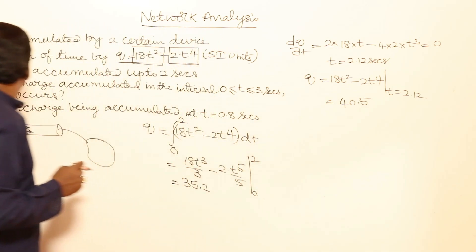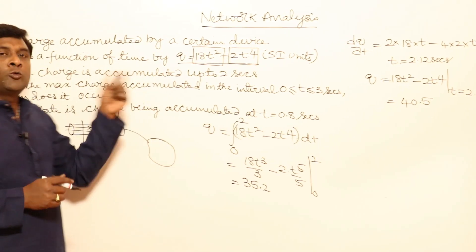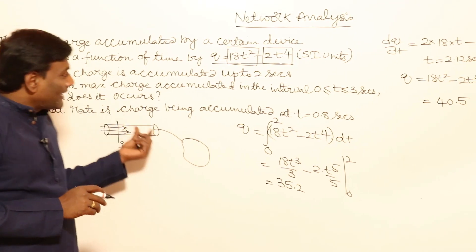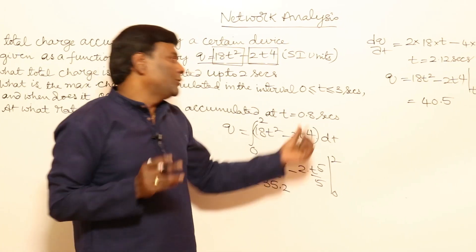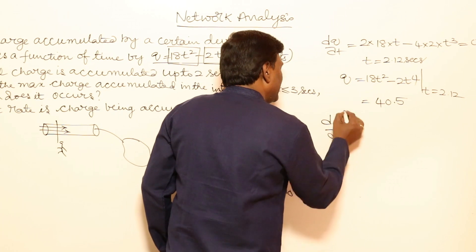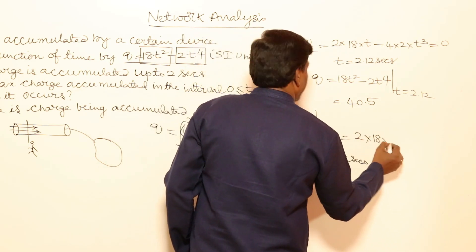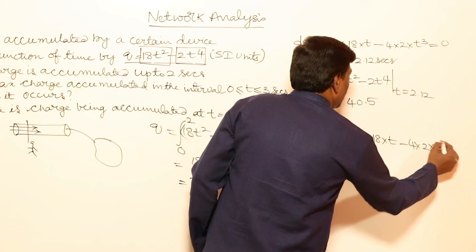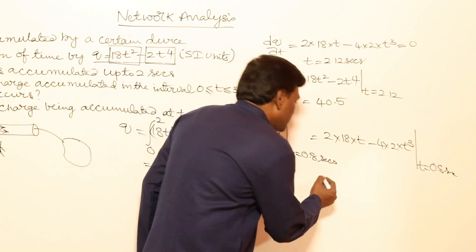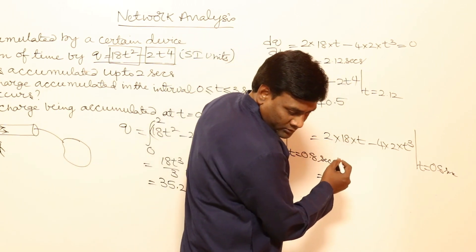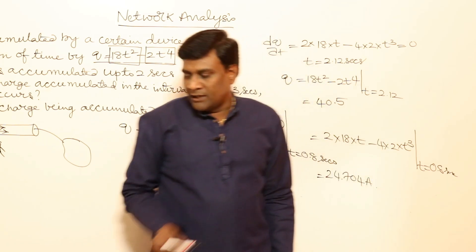What is the rate at which charge is being accumulated at t = 0.8 seconds? The rate of charge accumulation is current, so we compute dq/dt = 36t − 8t³ at t = 0.8 seconds. Calculating this gives approximately 24.70 — wait, the result is 24.576, approximately 24.70 amperes. That is the current value at t = 0.8 seconds.